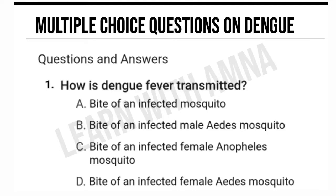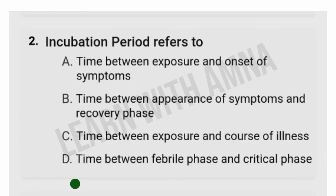Multiple choice questions on dengue. Number one: How is dengue fever transmitted? A) Bite of an infected mosquito. B) Bite of an infected male Aedes mosquito. C) Bite of an infected female Anopheles mosquito. D) Bite of an infected female Aedes mosquito. The correct answer is D.